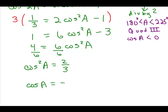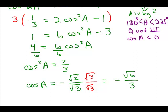So we're going to choose the negative square root. Taking the square root of 2/3, it's going to be negative the square root of 2/3. That gives us the square root of 2 over the square root of 3, and then we multiply numerator and denominator by square root of 3 to rationalize the denominator. So the cosine of a is negative square root of 6 over 3.